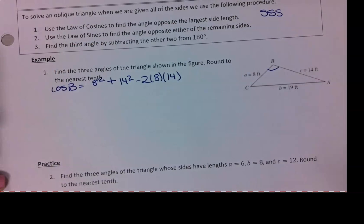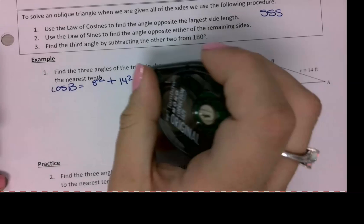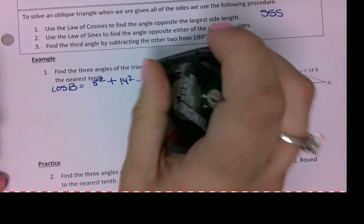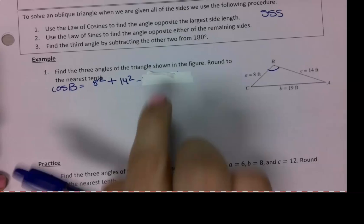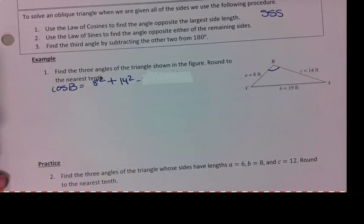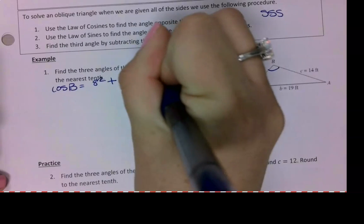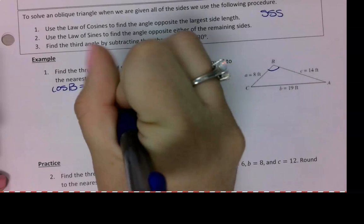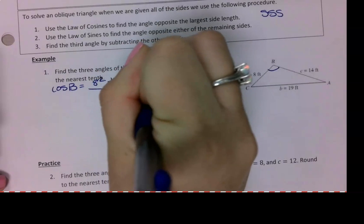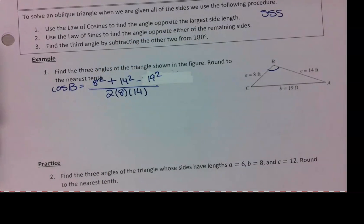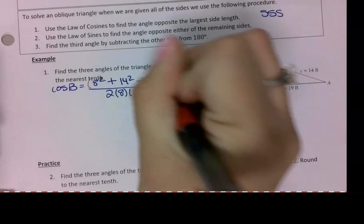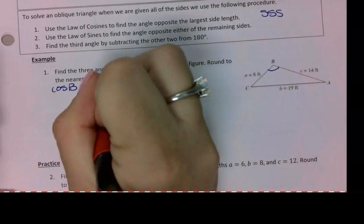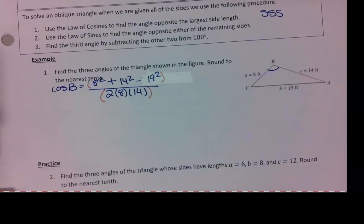Wait, wait, wait. I messed that up. I was confusing the bottom of that with where I was. So this should be minus B squared, 19 squared. Then the bottom goes on the, so this is the 2 times the 8 times the 14. So if I want to type this in the calculator, I want to make sure my numerator is in its own set of parentheses, and my denominator is in its own set of parentheses.